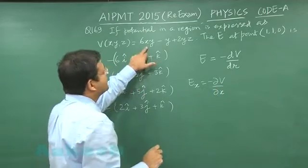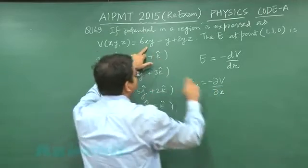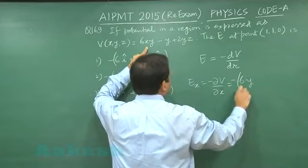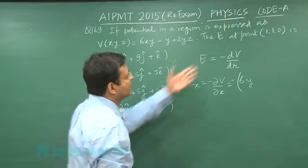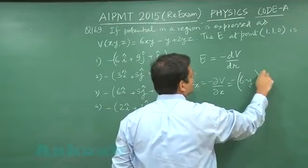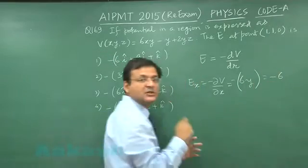If you differentiate with respect to x partially, it is to be 6y and all these things will be treated as constant. Value of y has been given as 1, so this will be having value 6 minus 6 Newton per coulomb.